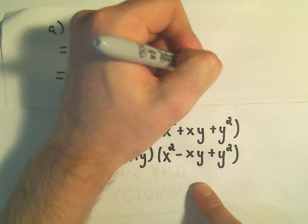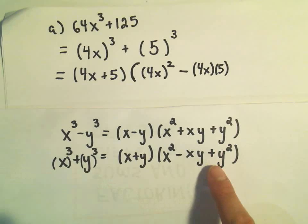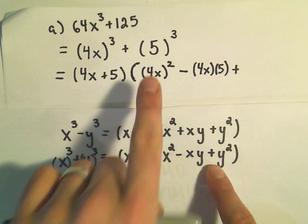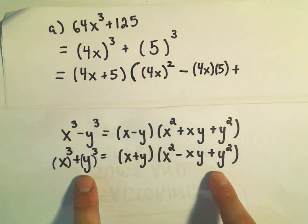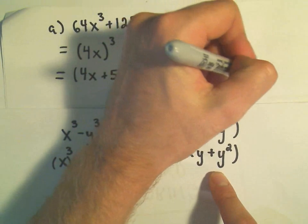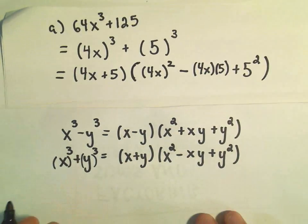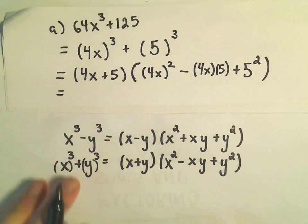So 4x times 5. And then it says write a plus, and it says whatever number was being originally cubed, we take that number and we square it. Certainly a little, I think it takes a little getting used to for sure.